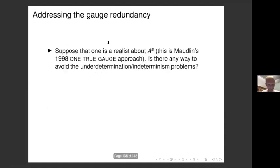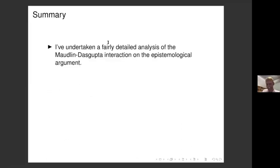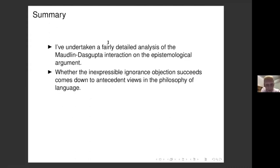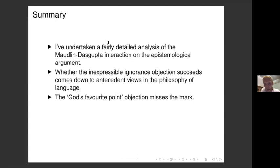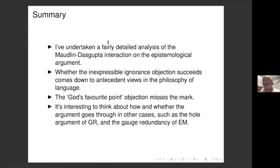To summarize: I've undertaken a relatively detailed analysis of the interaction between Maudlin and Dasgupta on the epistemological argument. Whether the inexpressible ignorance objection succeeds seems to come down to antecedent views in the philosophy of language. The God's favorite point objection, by contrast, misses the mark. And it's interesting to think about the extent to which this argument applies in the hole diffeomorphism case and in the gauge case as well. Thanks all for listening.